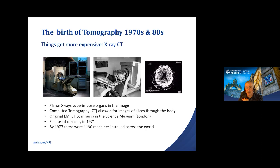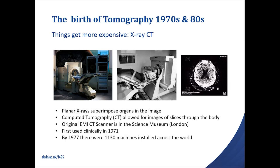You can see how revolutionary this was. The first CT scanner — Hounsfield's original EMI scanner — is still in the Science Museum in London. First used clinically in 1971, and by 1977 there were already over a thousand of these machines used across the world. Although much more expensive than Roentgen's original X-ray machines, it was revolutionary again and very quickly adopted into the clinic.